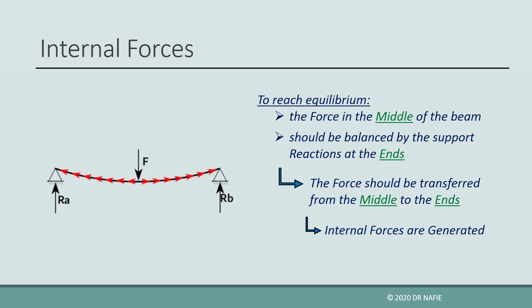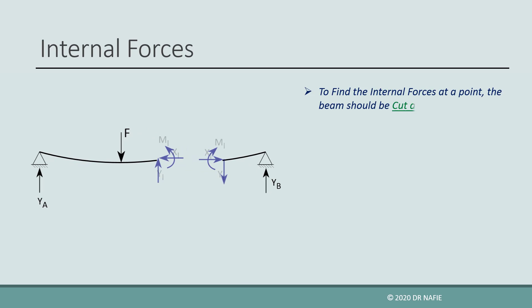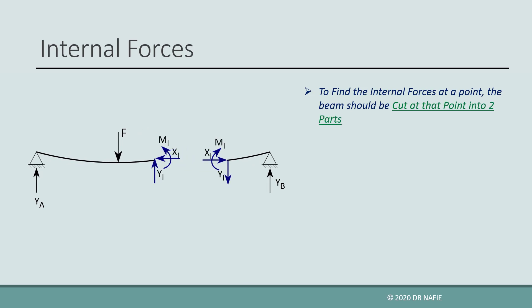Internal forces cannot be seen because they are internal. To make the internal forces at a point appear, the beam should be cut at that point into two parts. In 2D problems, when a beam is cut at a point into two parts, two internal forces and one internal moment will appear at that point in each of the two parts. Because both internal forces and moments exist, they should be called internal straining actions rather than internal forces.